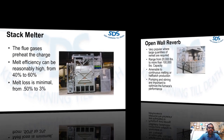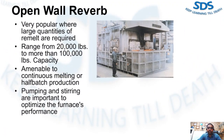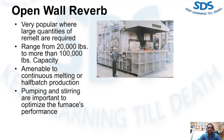Another furnace type is the open well reverb. This type of furnace is very popular with die casters where large quantities of remelt are required. Furnaces of this type range from 20,000 pounds to more than 100,000 pounds capacity. These furnaces are especially suitable for continuous melting or batch production. Pumping and stirring are important functions to optimize the performance of this line of furnaces.